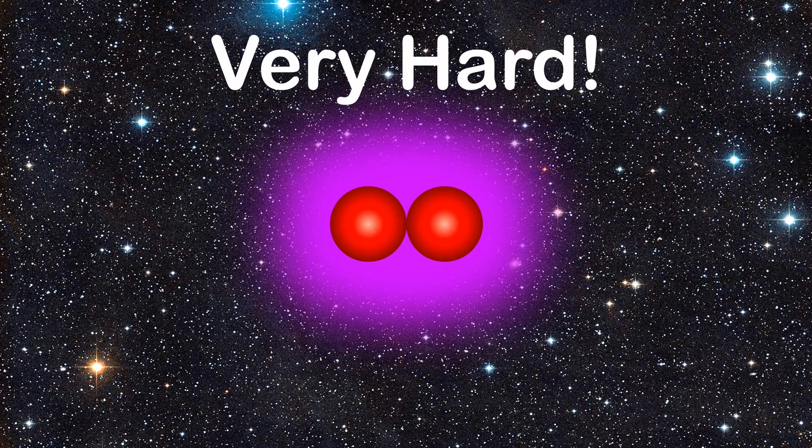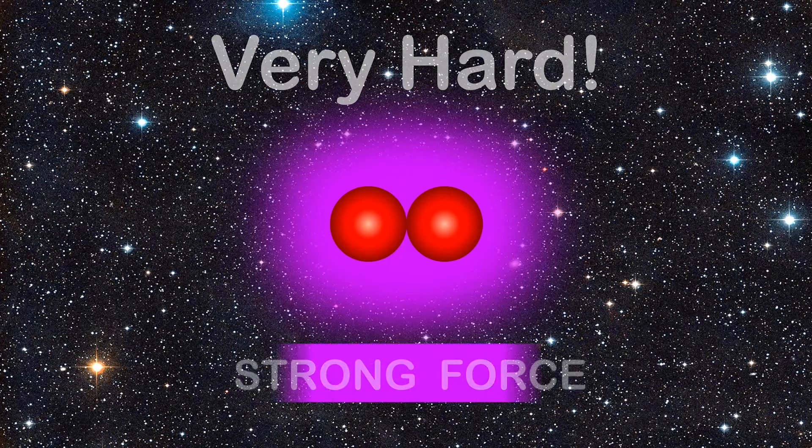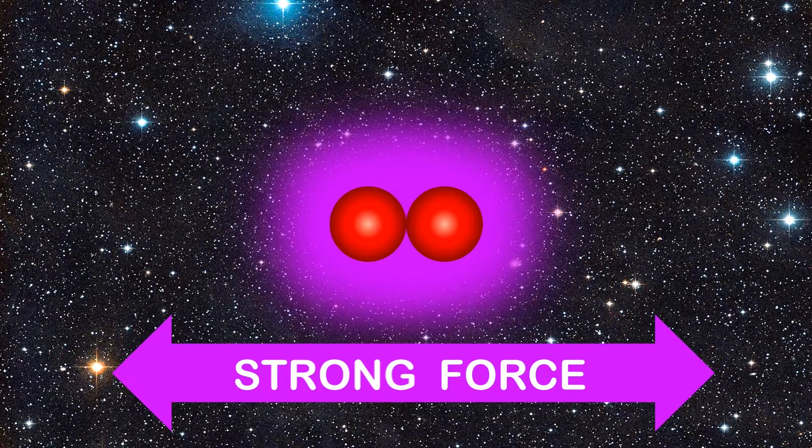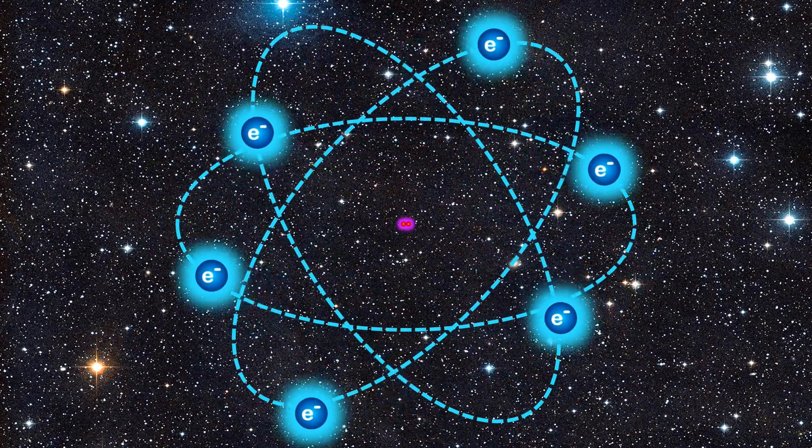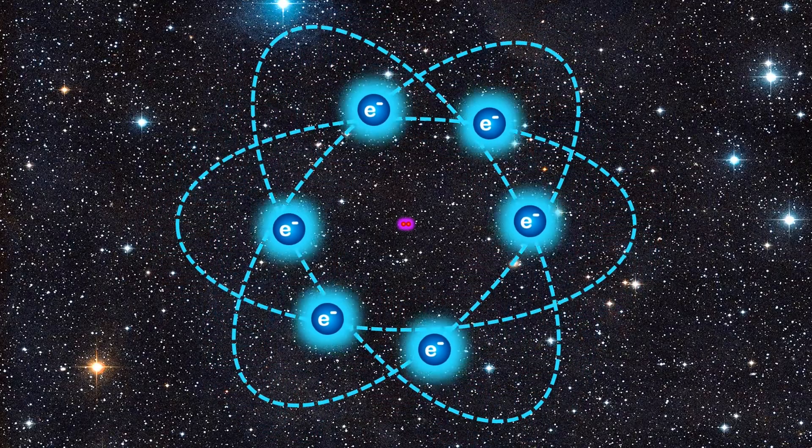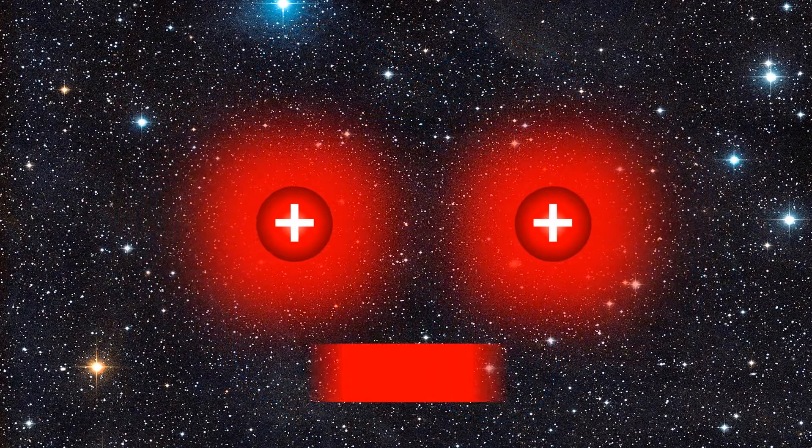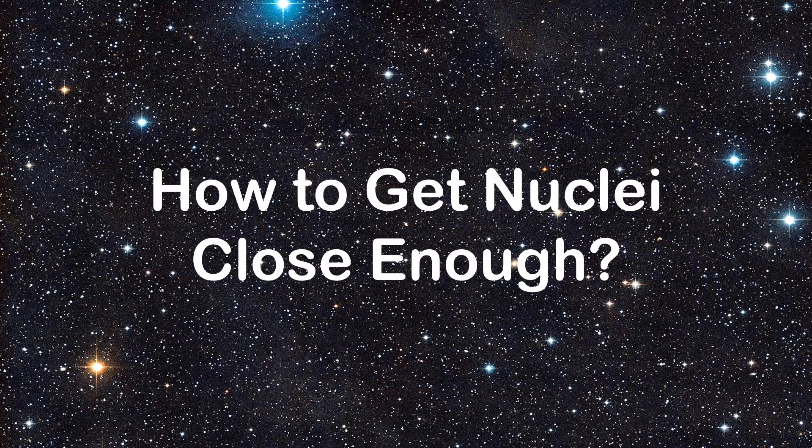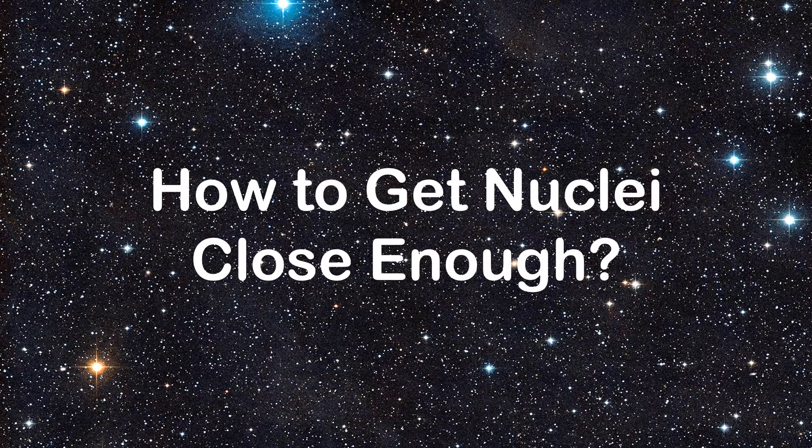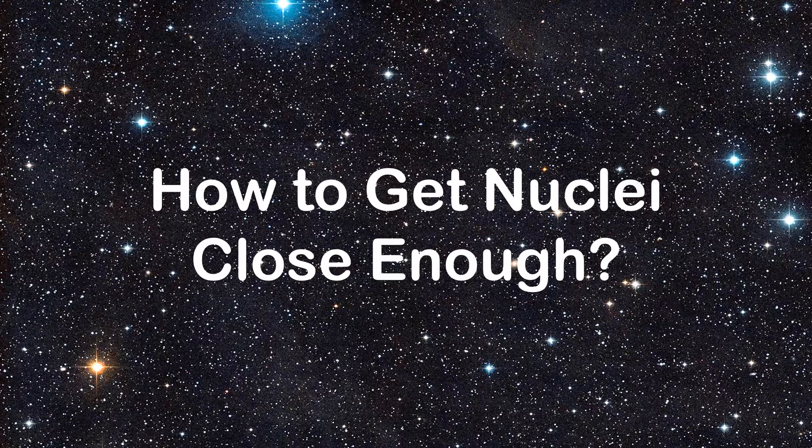But getting two nuclei to fuse is very difficult. You see, the strong nuclear force only kicks in when nuclei are very close, a hundred thousand times smaller than an atom to be exact. But because nuclei are both positively charged, they naturally want to repel each other. So how do stars force two nuclei that don't want to be near each other to get close enough for fusion to happen?